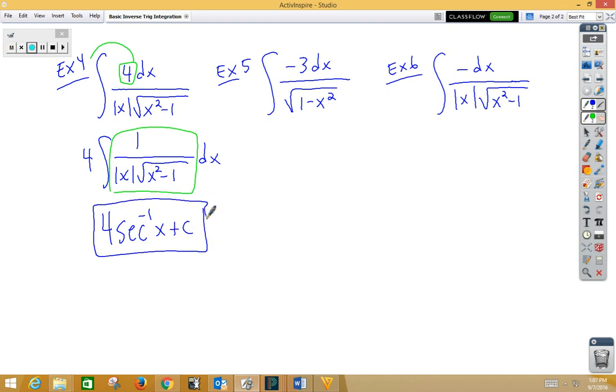In example 5, I'm going to move the negative 3 out in front, but I'm going to leave it alone. So I've got 3 integral negative 1, root 1 minus x squared dx. This would be 3 inverse cosine of x plus c,